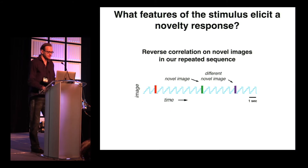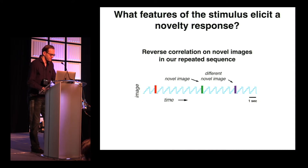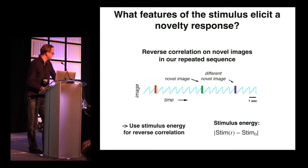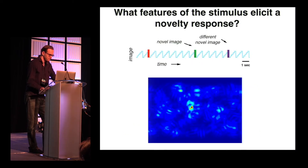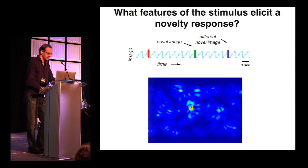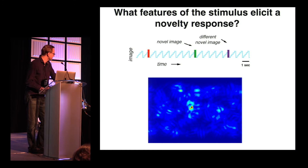Next we asked what feature of the stimulus elicits a novelty response — specifically, whether it is a global novelty response or something local. To answer this, we did reverse correlation on the novel images of the repeated sequence, using stimulus energy defined as the absolute value of the stimulus minus the background. We find localized hotspots approximately the size of V1 receptive fields, around 15 to 20 degrees. This means the novelty response comes from a local area in visual space and is not a global perception of novelty.